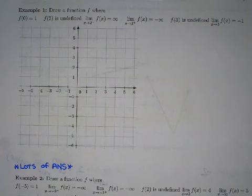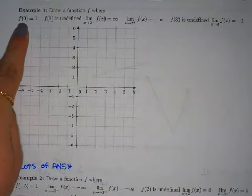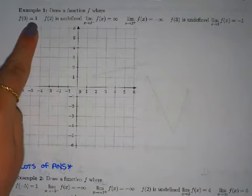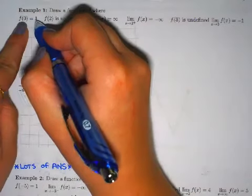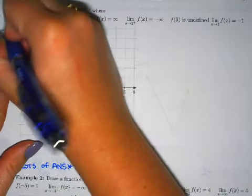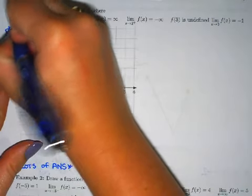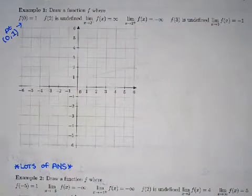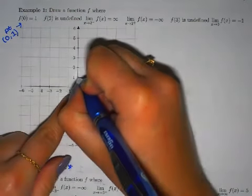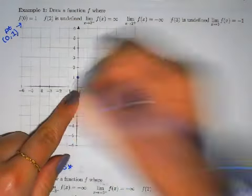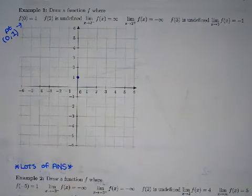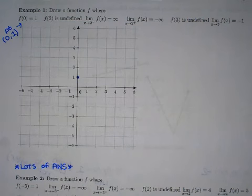We're going to take it piece by piece and go really slowly, then at the end check that all the pieces are true. The first thing we're given is f(0) = 1. That's not even a limit — it means if you plug in 0 for x you get 1 for y, so this is just the point (0, 1) on the graph. I would give partial credit just for drawing that point.